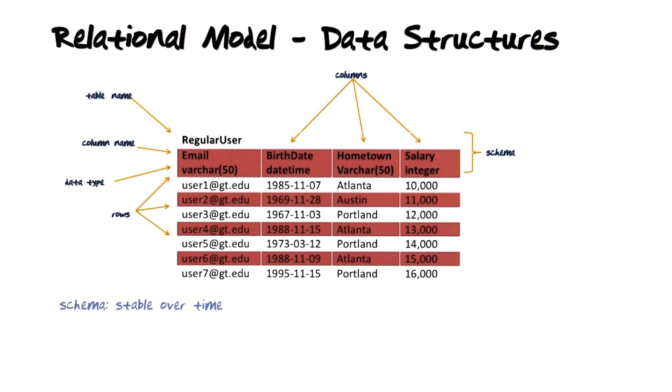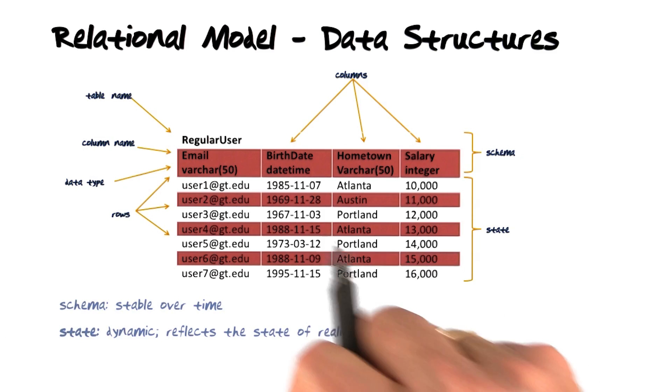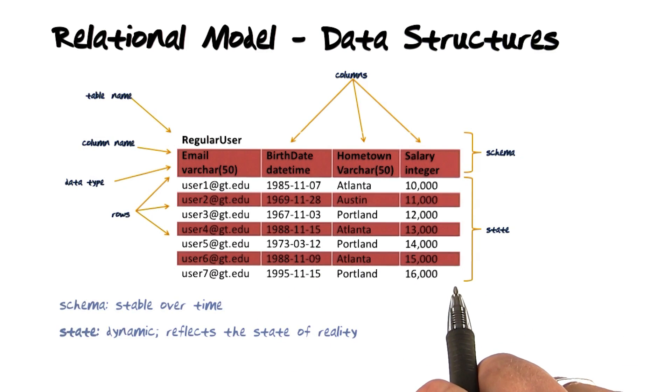The schema represents aspects of the data that are stable over time. In other words, the schema is not expected to change. The state of the database represented by the rows in the table reflect aspects that are dynamic and change over time.